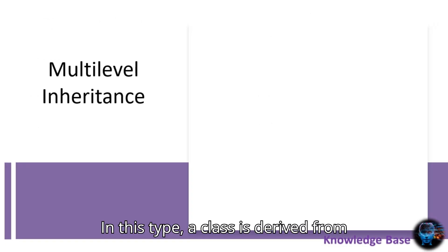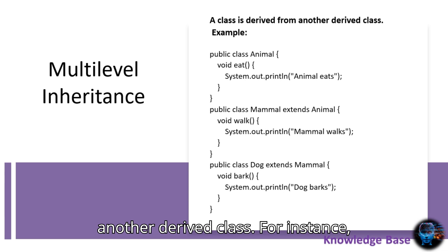Next up is multilevel inheritance. In this type, a class is derived from another derived class. For instance, consider an animal class, a mammal class that extends animal, and a dog class that extends mammal.